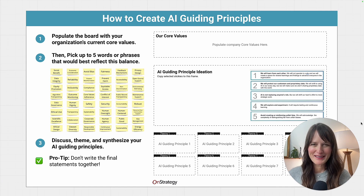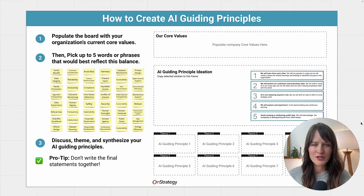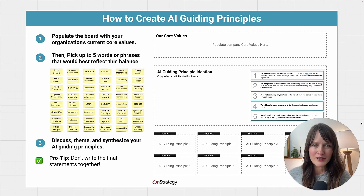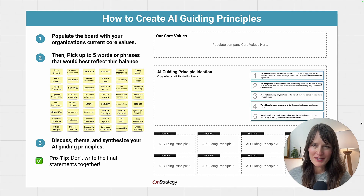Let's jump in to the whiteboard. So here is our handy dandy little whiteboard. As always, we're giving you a way to guide a conversation with you and your organization to create clarity, direction, and in this case, AI guiding principles. Just in context again, having a responsible AI policy in place for your organization is critical to thriving and yielding the benefits that AI can have for you and your team. Guiding principles are one piece of several pieces of that policy.